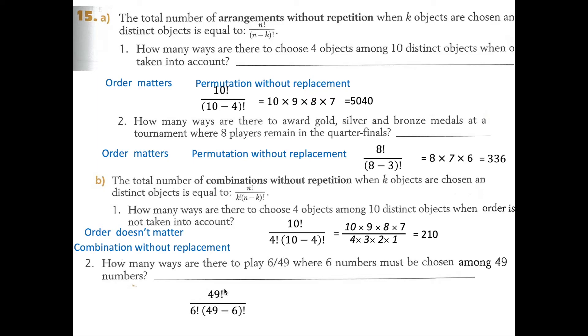It's going to be 49 factorial divided by 6 factorial divided by 49 takeaway 6, which is 43 factorial.